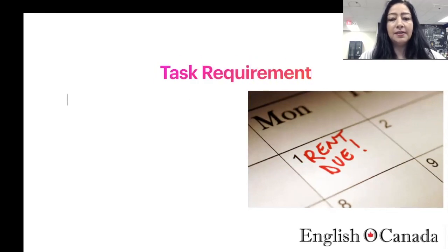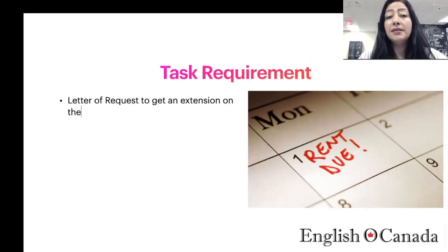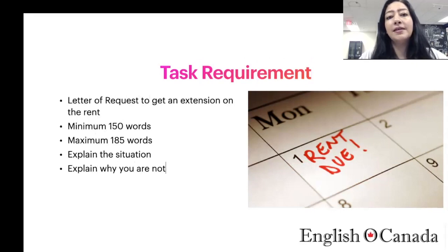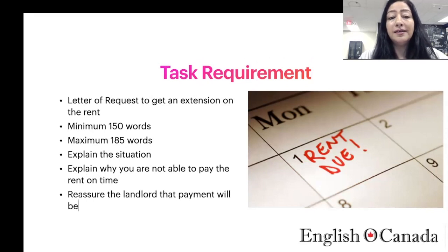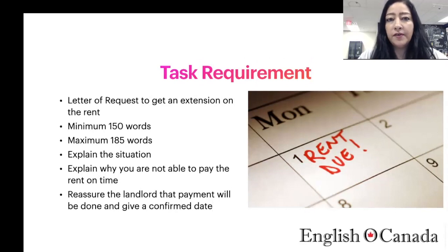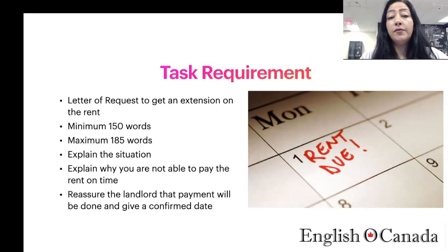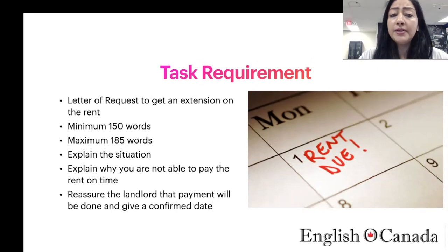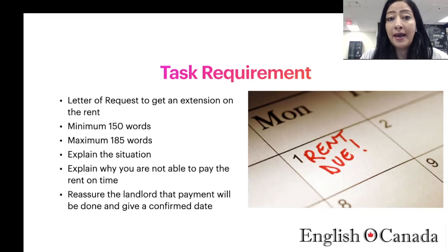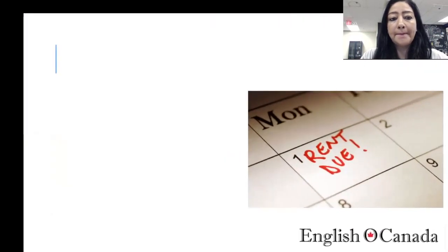So what is the task requirement? It is a letter of request, and you need to write this letter because you need an extension on the rent payment. Task 1 is always 150 words, and I always suggest you keep it at 185 — the maximum you can stretch it to is 195 words. You have to explain the situation: what happened and why you are facing the financial problem. Let the landlord know why you are not able to pay the rent on time, give them the reasons, and also let them know when you would pay again.